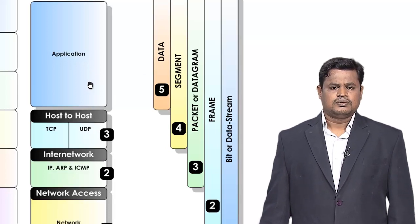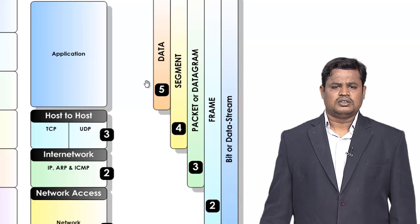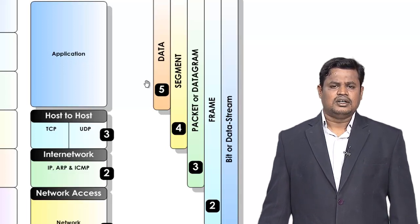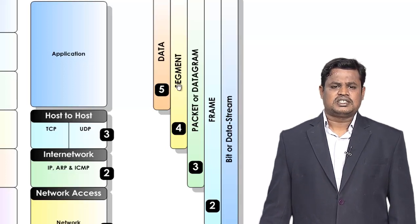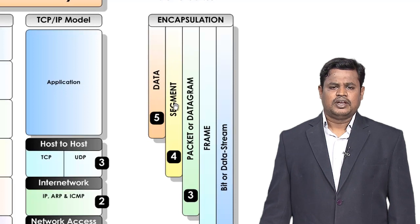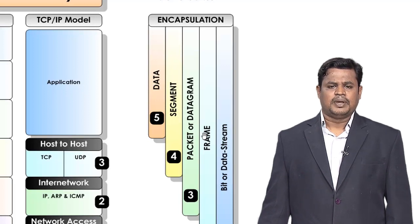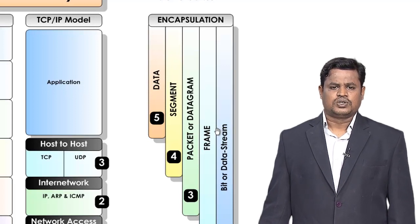Encapsulation means making data available for the end user by adding additional information — like a postcard or letter analogy. I take data, put it in an envelope (segment), add name and address (packet), add pin code or additional information (fragment), and send it as a bit stream. Each intermediate device along the path de-encapsulates and re-encapsulates the data.